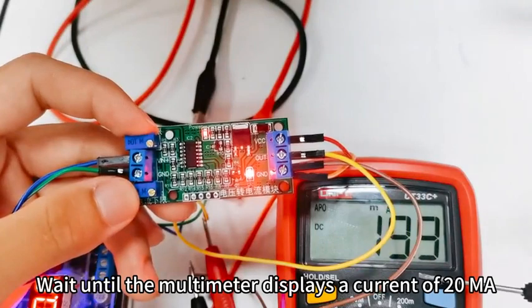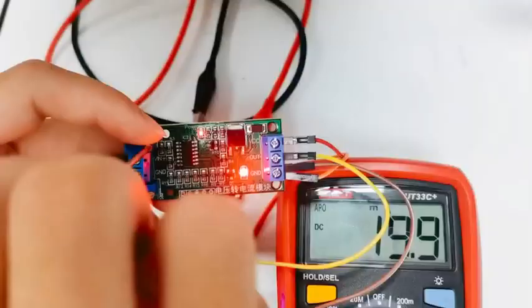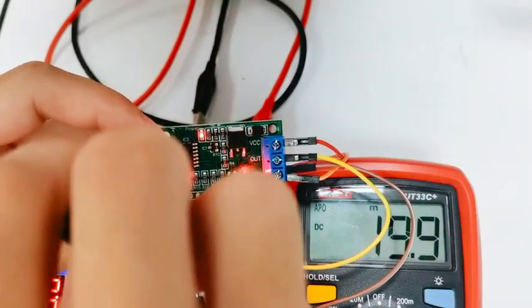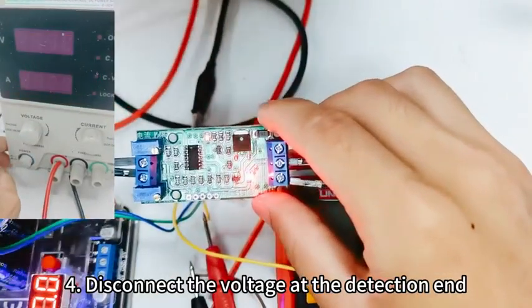Wait until the multimeter displays a current of 20mA. Step 4: Disconnect the voltage at the detection end.